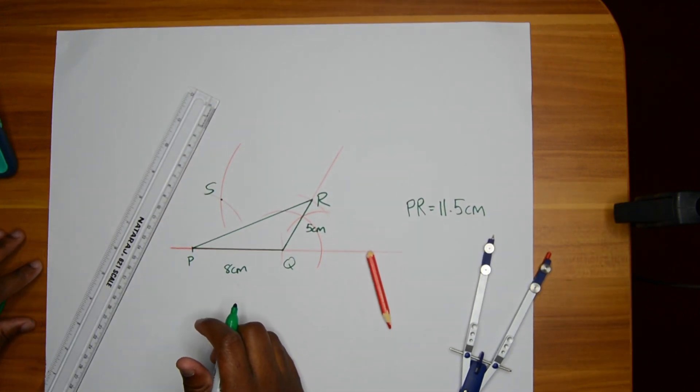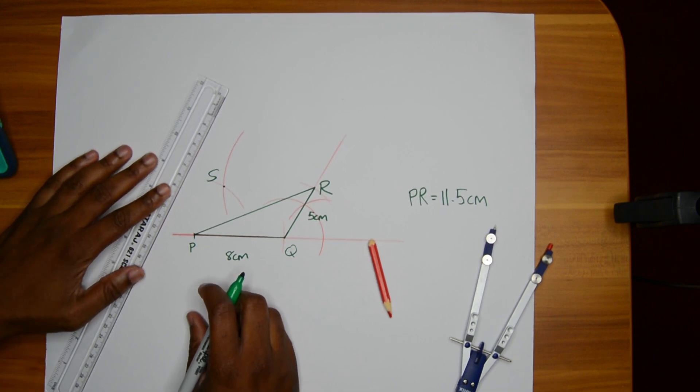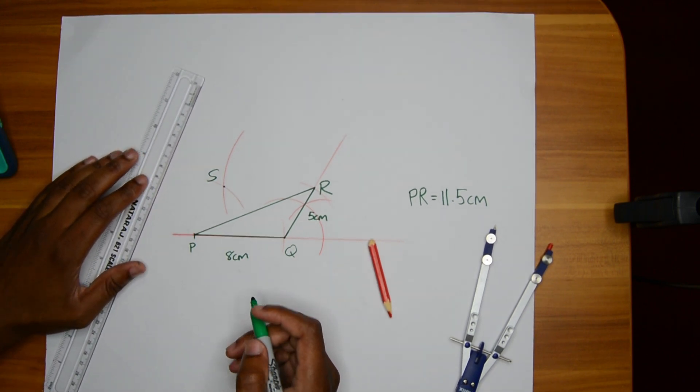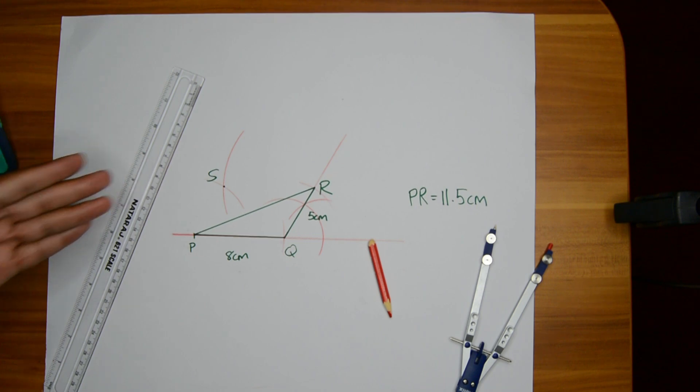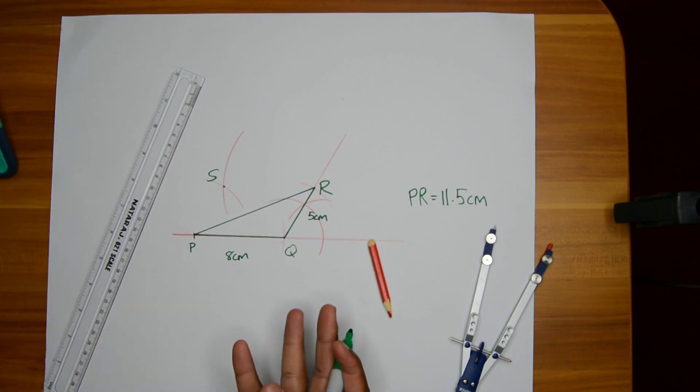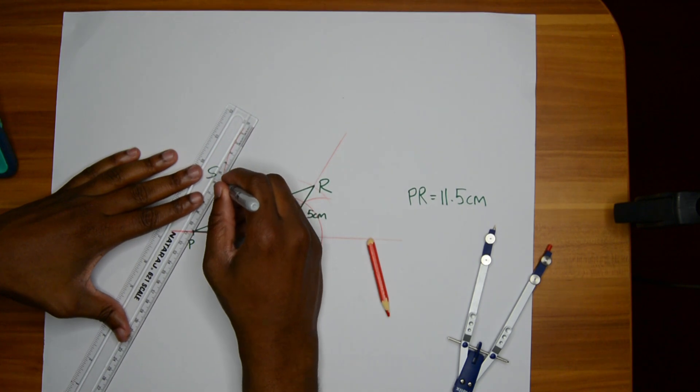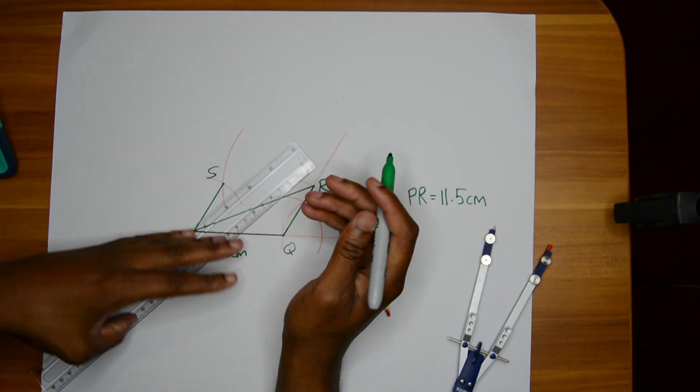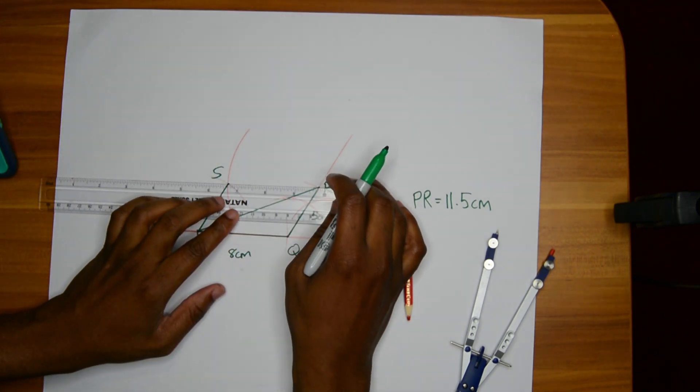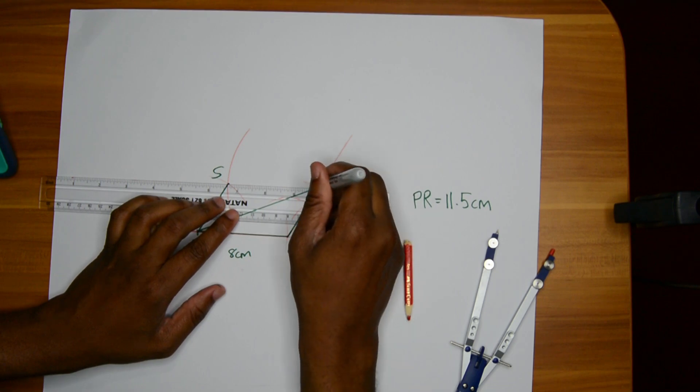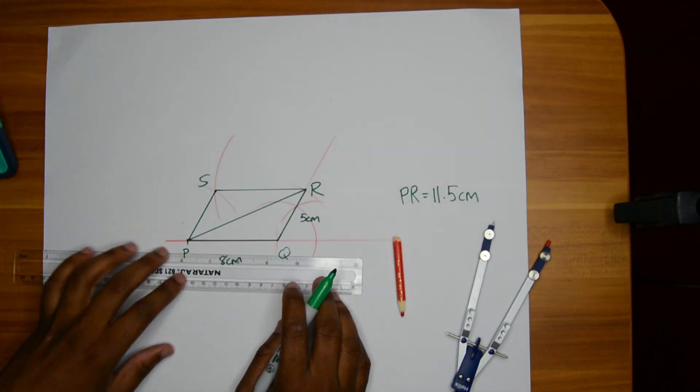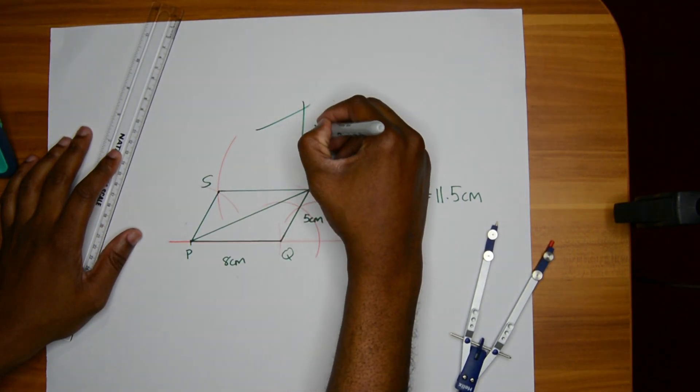PQRS - on the diagram construct the point S such that PQRS forms a parallelogram. Technically this should get the mark because they just said to construct a point S such that it forms a parallelogram. But let's not be technical with the examiners. Let's go and construct this parallelogram. Just like that, 7 marks.